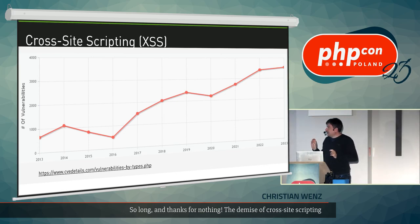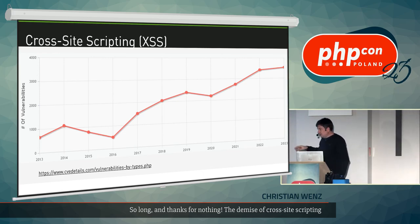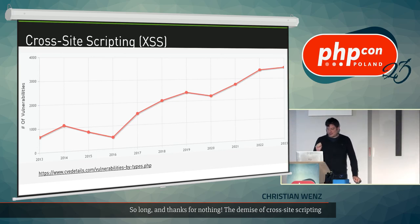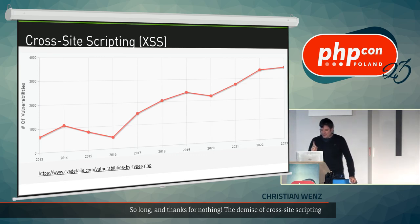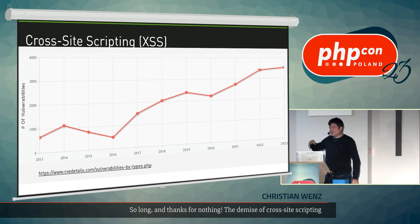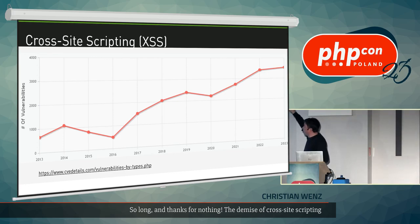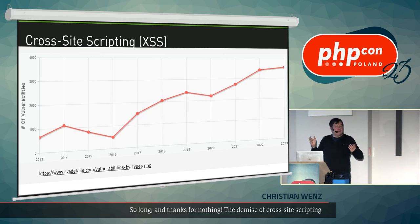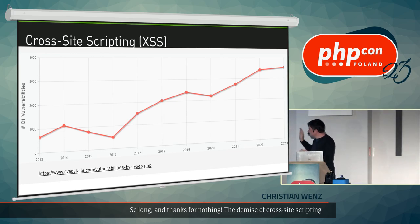I took this diagram at the end of September this year. It starts at 2013 on the x-axis and goes to 2023. End of September was the first time I noticed that the 2023 values surpassed the 2022 ones. If we assume vulnerabilities are found linearly throughout the year, with three months still to go we'd need to add one third — making the 2023 number literally off the charts. Cross-site scripting is still a big problem.